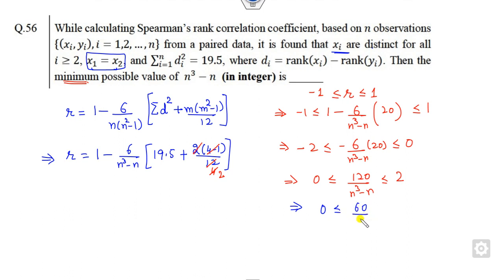So it will be 60 upon n³ - n is less than 1, or you can take the reciprocal. What is the minimum answer of n³ - n?